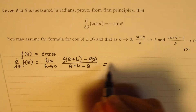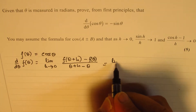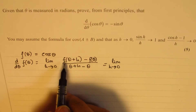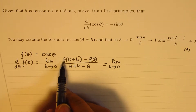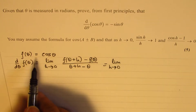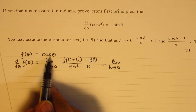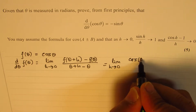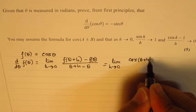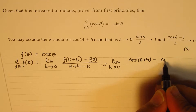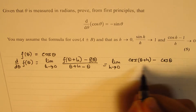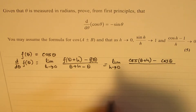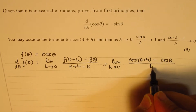So we could write this as limit h approaches 0. Now, when I say f(θ + h), the function is cos θ. So it becomes cos(θ + h) minus f(θ), which is cos θ, over (θ + h) minus θ, which is h.